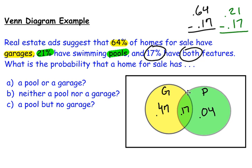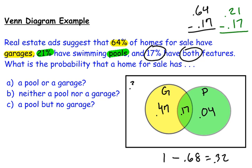The last thing to fill in is the percentage of homes with neither feature, which goes outside both circles. Adding 0.47 plus 0.17 plus 0.04 gives 0.68. Since all probabilities must add up to 1, I take 1 minus 0.68 to get 0.32. So 32% of homes have neither a pool nor a garage.